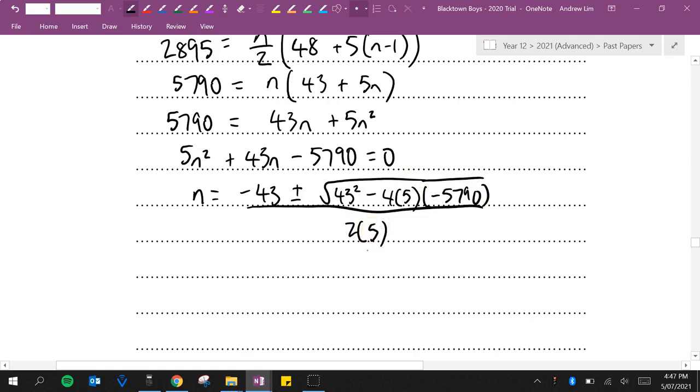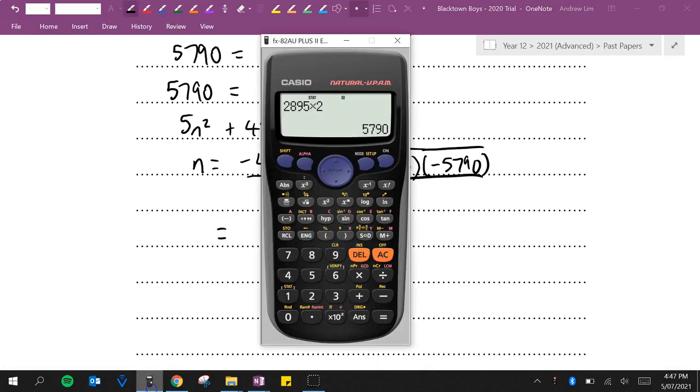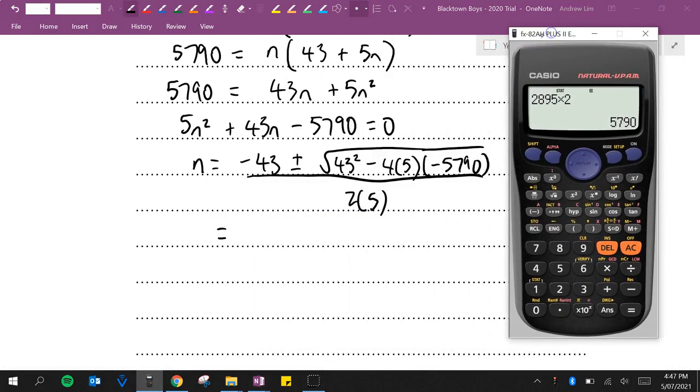However, we probably won't need the minus. Let's just double check that. So we've got minus 43. Actually, let's put it back in normal mode. Minus 43 plus the square root of 43 squared minus 4 times 5 times minus 5,790, all over 2 times 5, is 30.